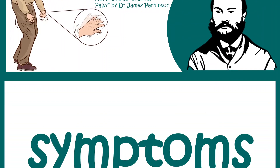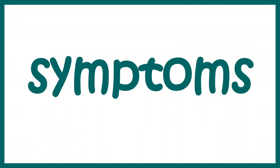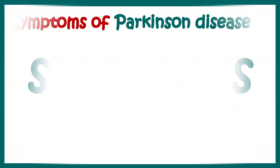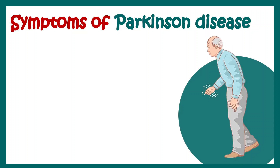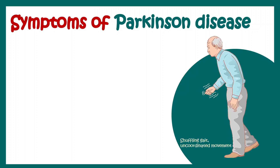When we look at the symptoms, it would be clear why it is known as shaking palsy. The major symptoms of Parkinson's include shuffling gait and uncoordinated movement. There is always tremor associated with this disease. This tremor is persistent and tremor in hands occurs even at rest, which is probably why he named this disease shaking palsy.